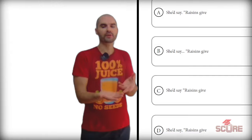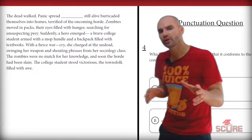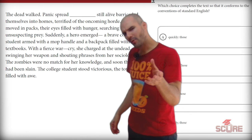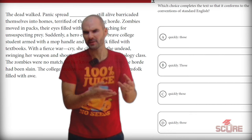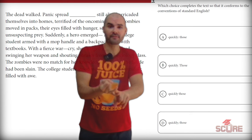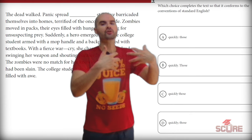Now this one's a little bit trickier. We see here that we have a bunch of different punctuation options between the word 'quickly' and 'those.' Taking a look at our paragraph, we see: panics spread blank — still alive, barricaded themselves into homes, terrified of the oncoming horde. Talking about a zombie apocalypse here — I think this is from World War Z. I really have a couple of options here. On one hand, I could go ahead and just make a new sentence and say 'quickly, period, those' and continue. However, starting off with that pronoun is a little bit clunky. Also, the rest of this sentence is referring to that panic, that fear — people barricading themselves into homes and being terrified of the oncoming horde. So there are two things attached to that idea of panic, and it makes sense to keep this sentence all together with a form of punctuation that can conjoin two independent clauses. That's our semicolon.